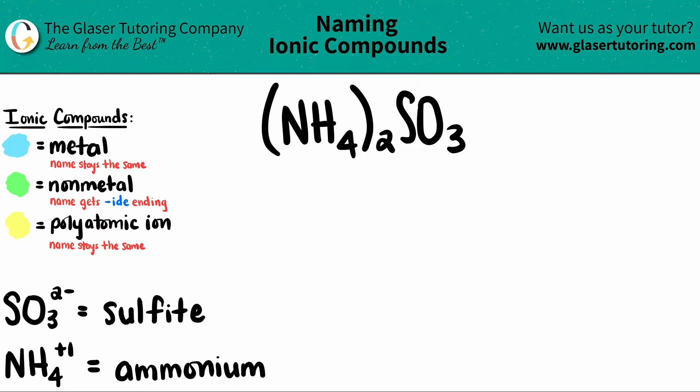Now, here's a trick, guys. Whenever you see that you have three or more different elements on your ionic compound, you know that you're dealing with at least one polyatomic ion.